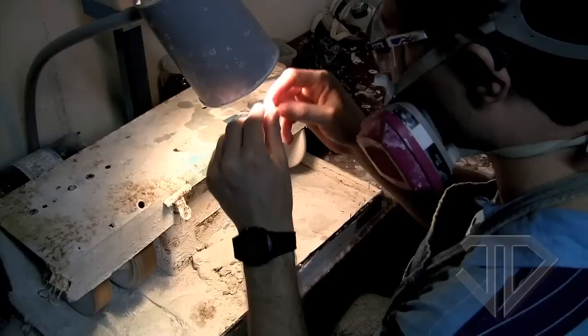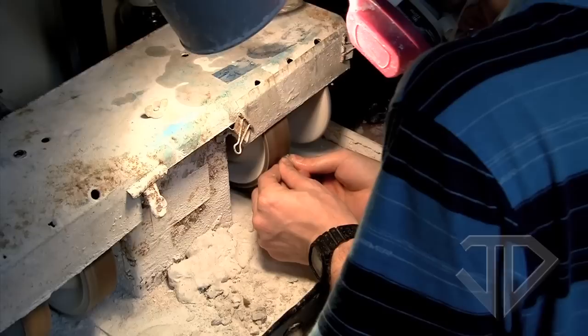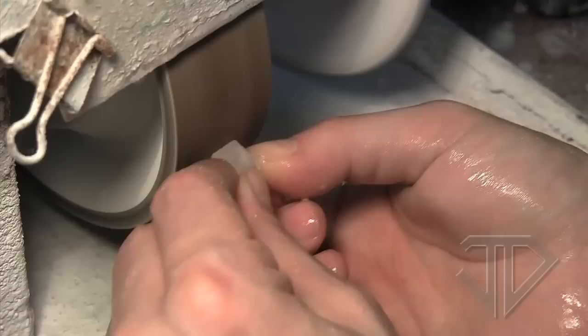The gem is examined again to decide what shape the final gemstone will be. Then the gem is ground freehand into a rough representation of its final shape. This is called the preform and is an important step as the final shape of the gem is defined.